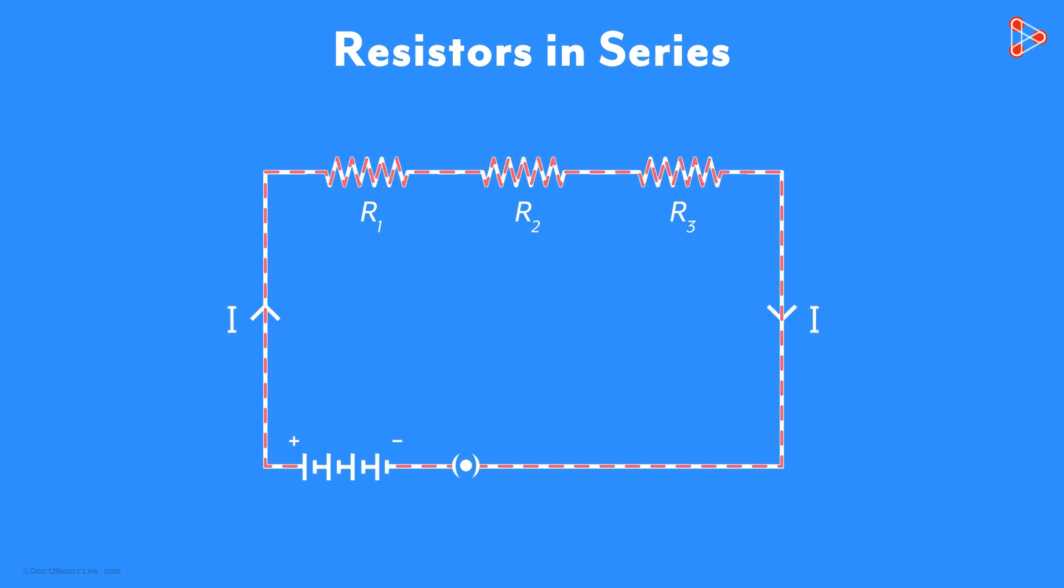Next, place the ammeter somewhere between resistors R1 and R2 and note its reading. Similarly, place it between R2 and R3 and note the reading. What you will notice is that the current will be I amperes in each case.